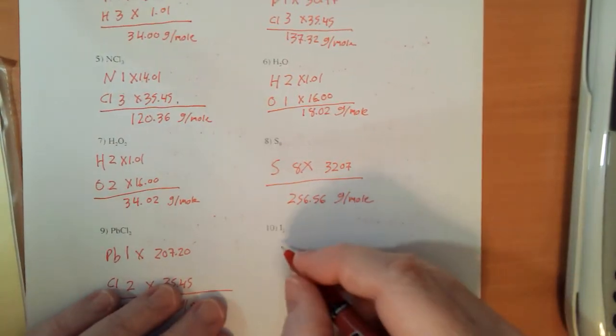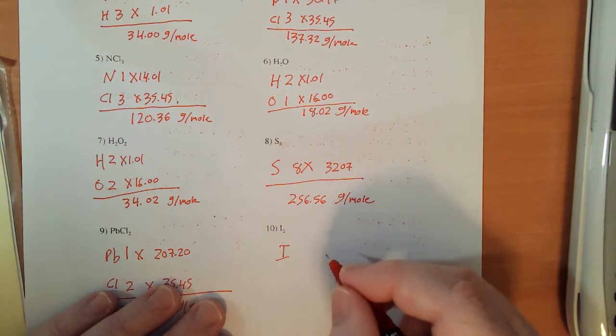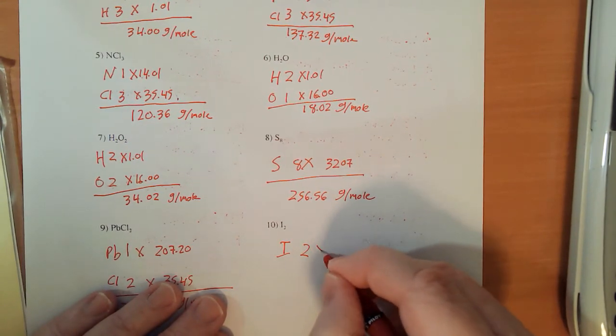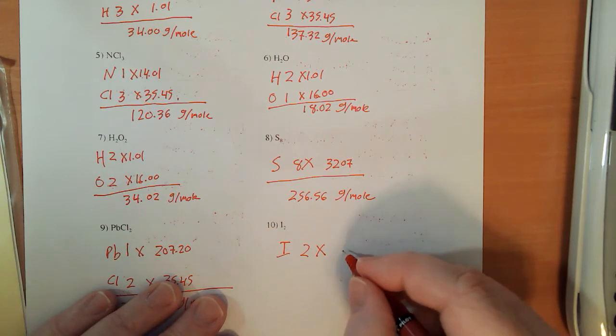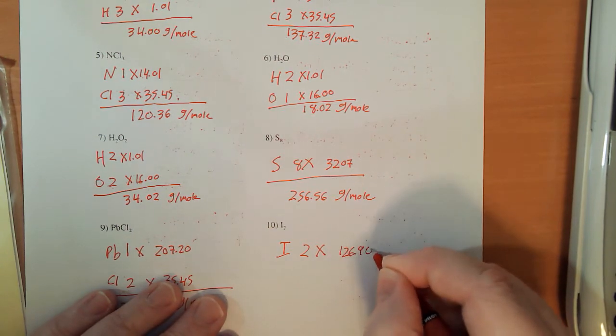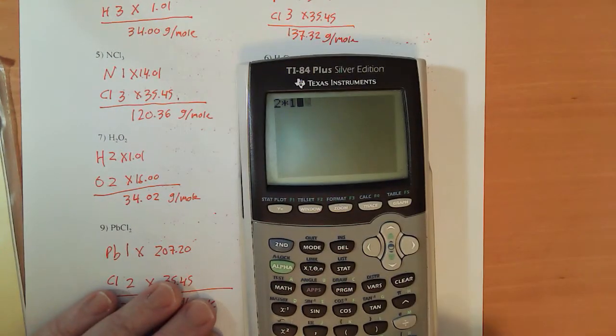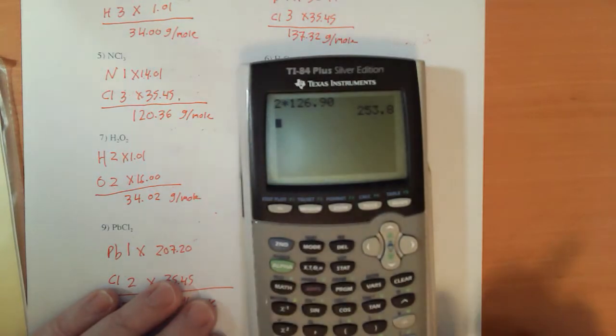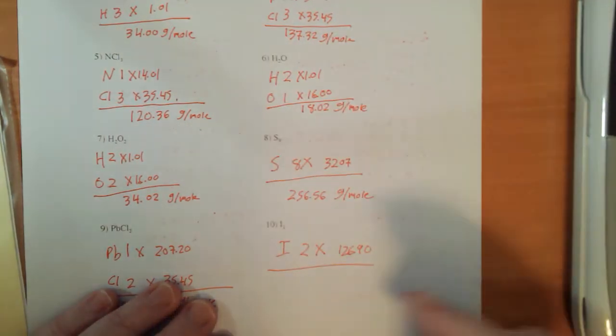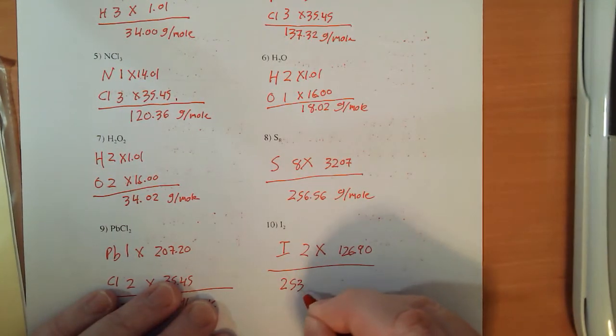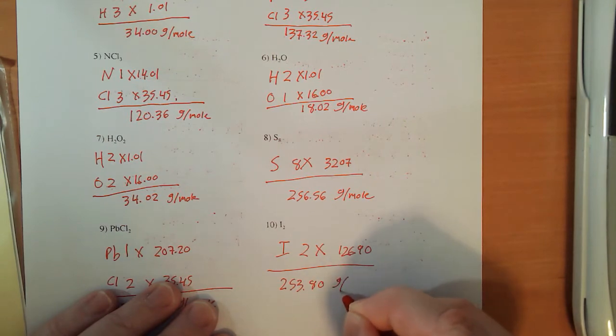The last one for this side is diatomic iodine, two times 126.90. So 2 times 126.90, and I'm getting 253.80 grams per mole.